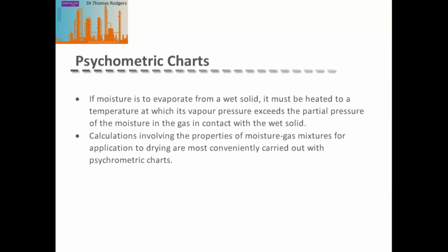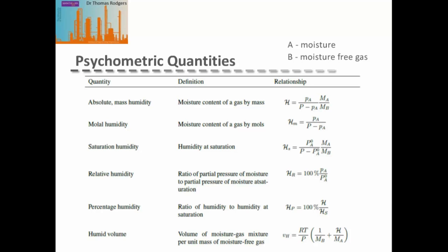Calculations involving the properties of moisture-gas mixtures are commonly and conveniently carried out on psychometric charts. For their use, some key parameters need to be known. The main one is the absolute humidity, commonly referred to by mass, which is the ratio of the vapor pressure of the moisture to the vapor pressure of the moisture-free gas.